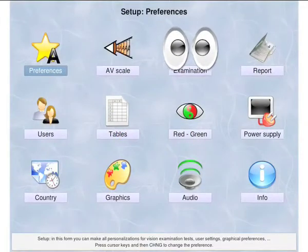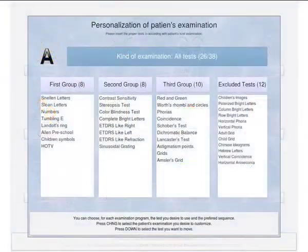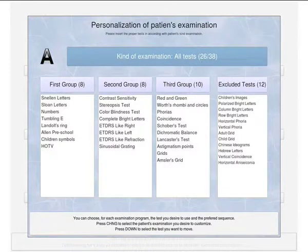Open the setup window and enter it in the visit examinations window. In this window, it is possible to personalize the left column, central column, and right column list of tests according to the kind of examinations.